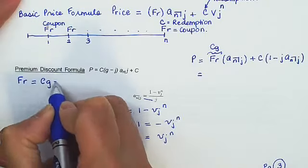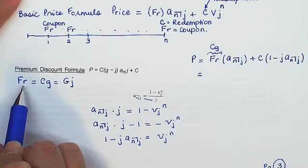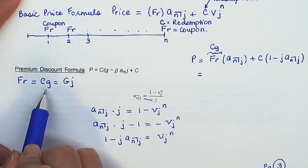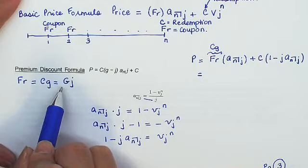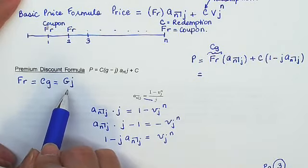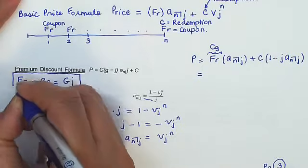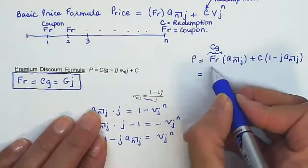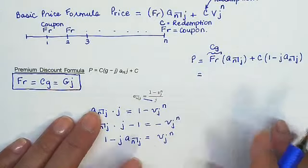FR equals CG equals GJ. So it's saying that the face amount times the coupon rate per period R is equal to the redemption times the modified coupon rate lowercase g. And that's also equal to the base amount times J, which is the yield rate per period. So this should be memorized. You're going to use that over and over again. So here, coming back to this, I would like to replace FR by CG.